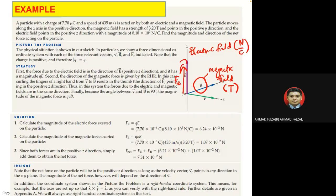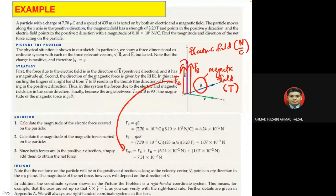We also determine the direction of magnetic force using v cross B to get F_B. So the net force F_net equals F_B plus F_E. These are very good examples for understanding the concepts of electric field, magnetic field, and their respective forces.